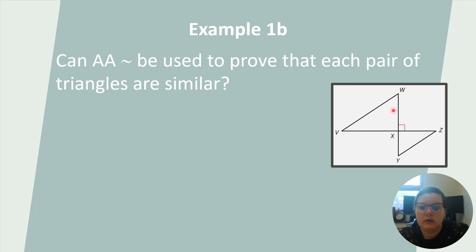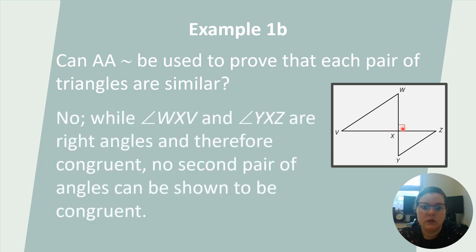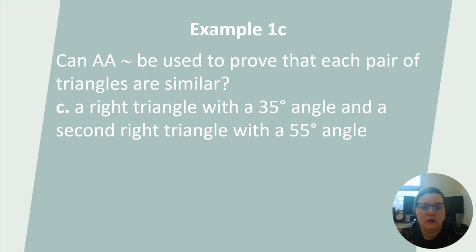Here's another example. We have triangle UVX and triangle ZXY. We have a right triangle here, which means both are right triangles, so we have at least one angle that is congruent. However, we don't have a second pair of congruent angles, so we can't use the angle-angle similarity postulate to prove that these triangles are similar.